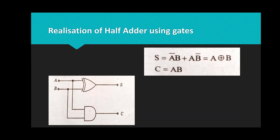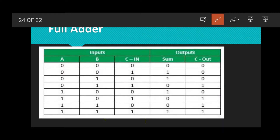Now let's go to full adder. A full adder has 3 inputs: A, B, and C. The input combinations are 000, 001, 010, 011, 100, 101, 110, 111. We compute A plus B plus C to get the sum and carry output. For 000: sum 0, carry 0. For 001: sum 1, carry 0. For 110: 1 plus 1 plus 0, sum 0, carry 1. For 111: 1 plus 1 plus 1, sum 1, carry 1. This is the truth table.